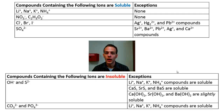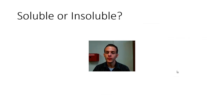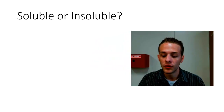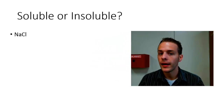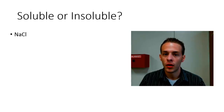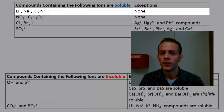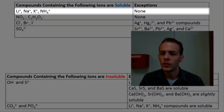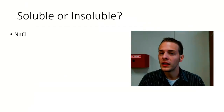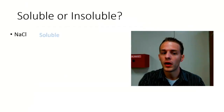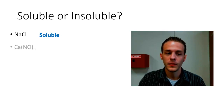The solubility rules really aren't that hard. Your teacher may provide them on a test, but even if not, they're not too hard to memorize. Let's go through a few examples. First: sodium chloride, NaCl — soluble or insoluble? The first rule says any compound containing sodium ion is soluble with no exceptions, so we know sodium chloride is soluble in water.